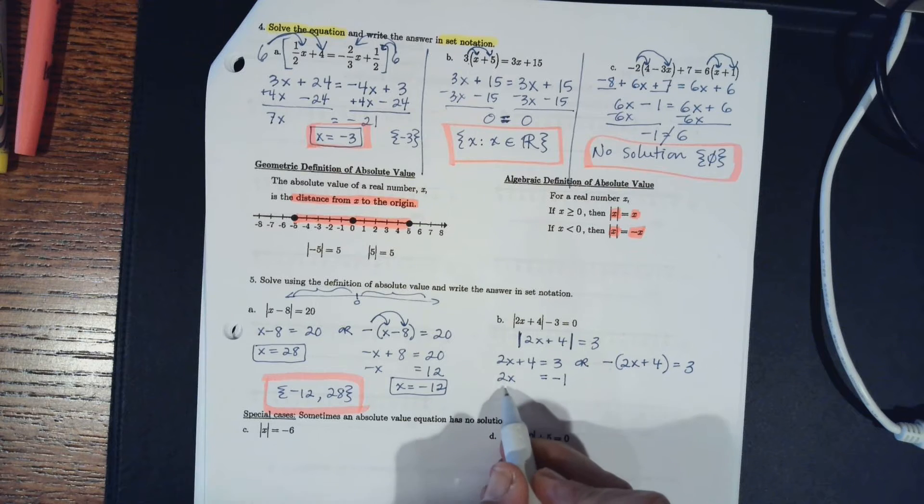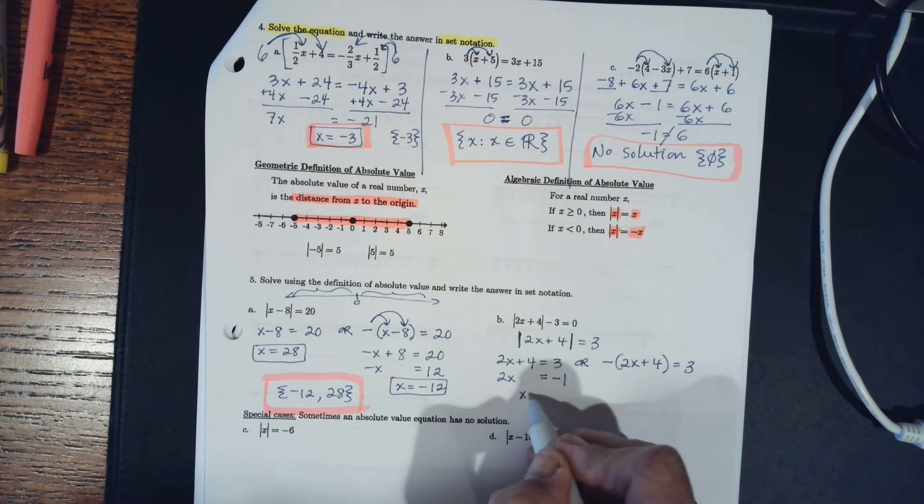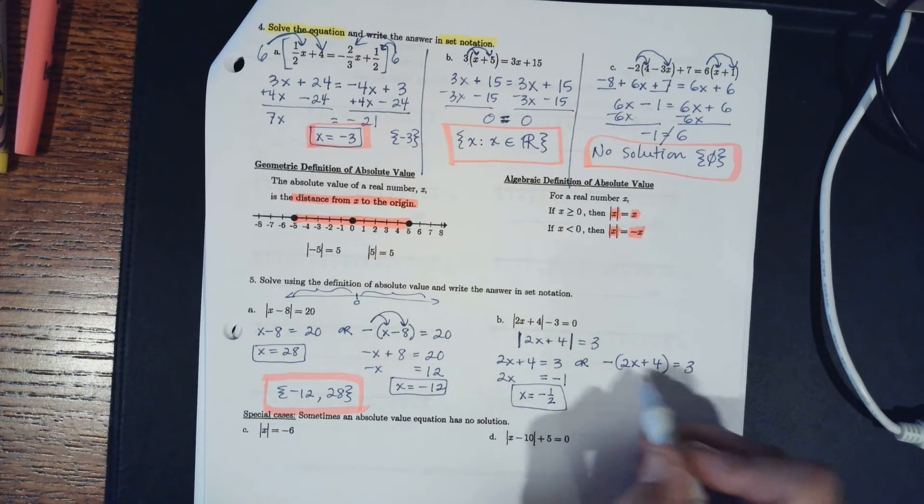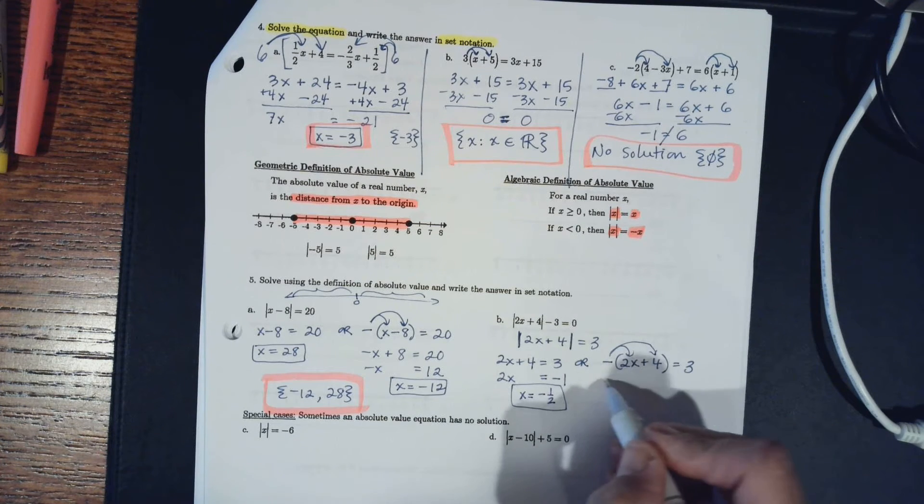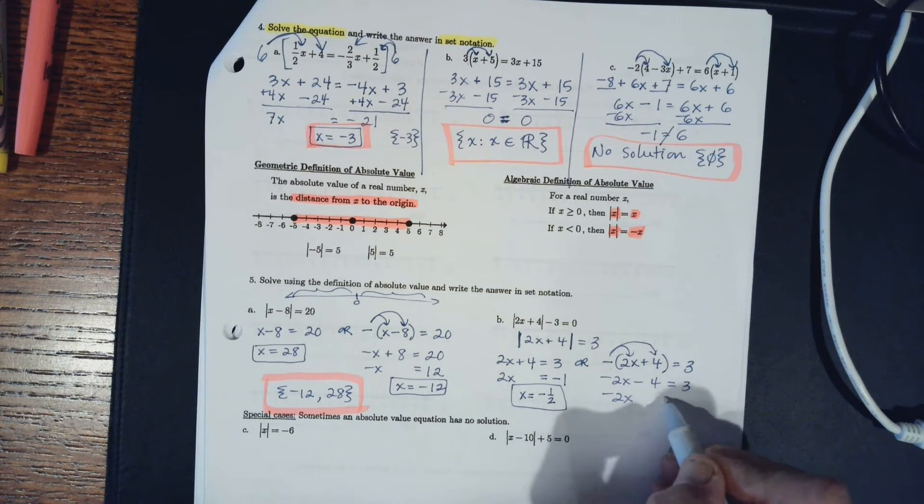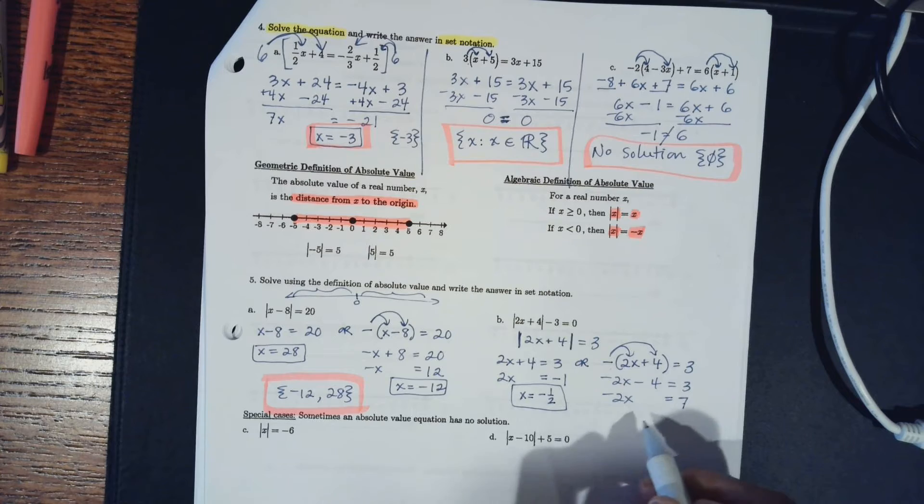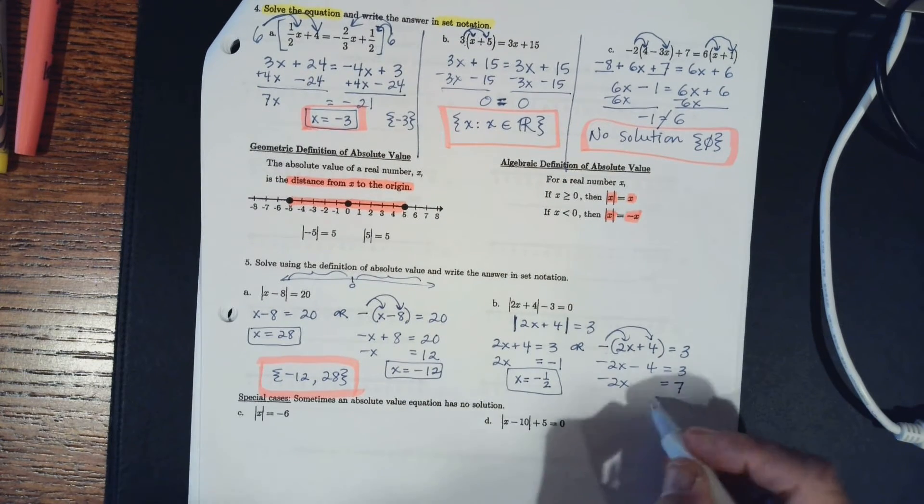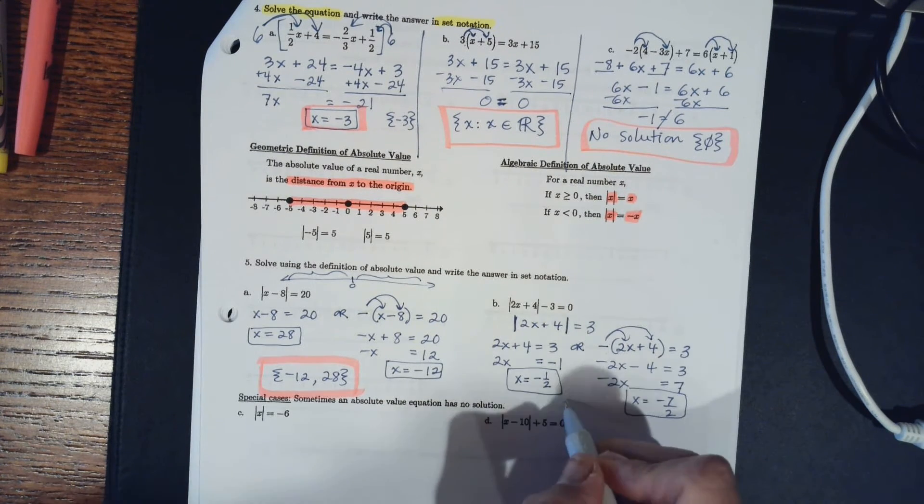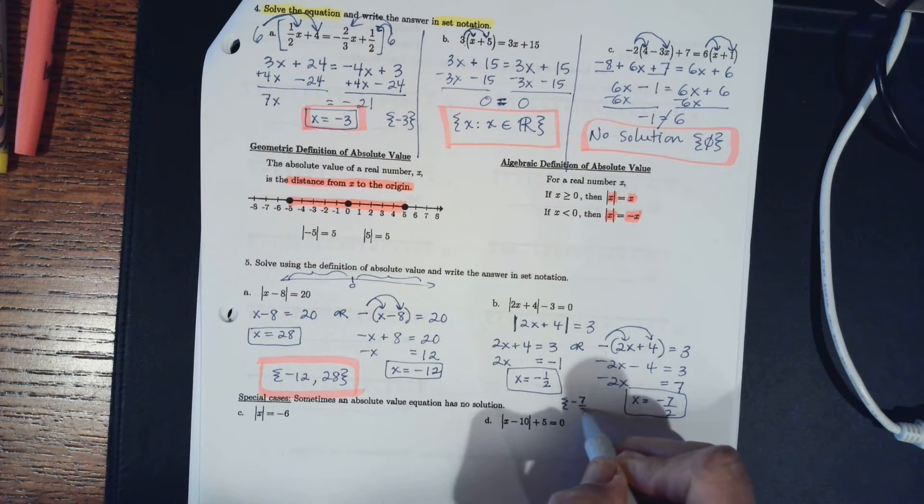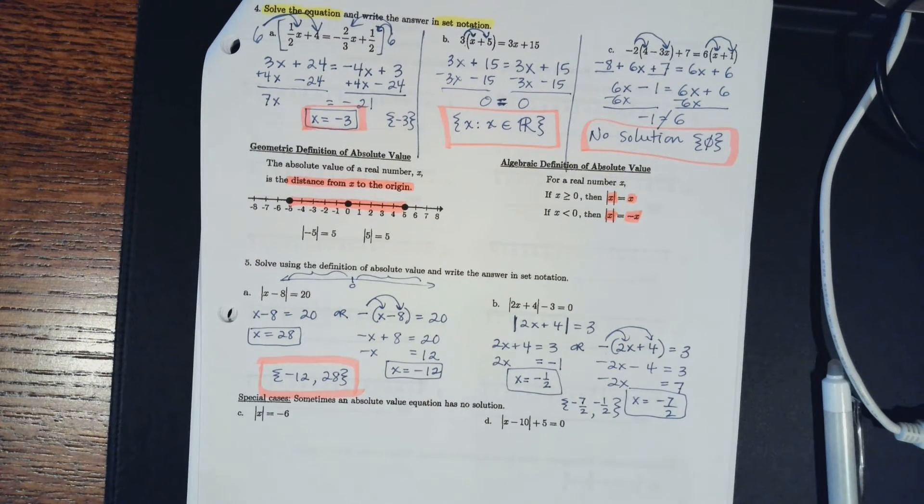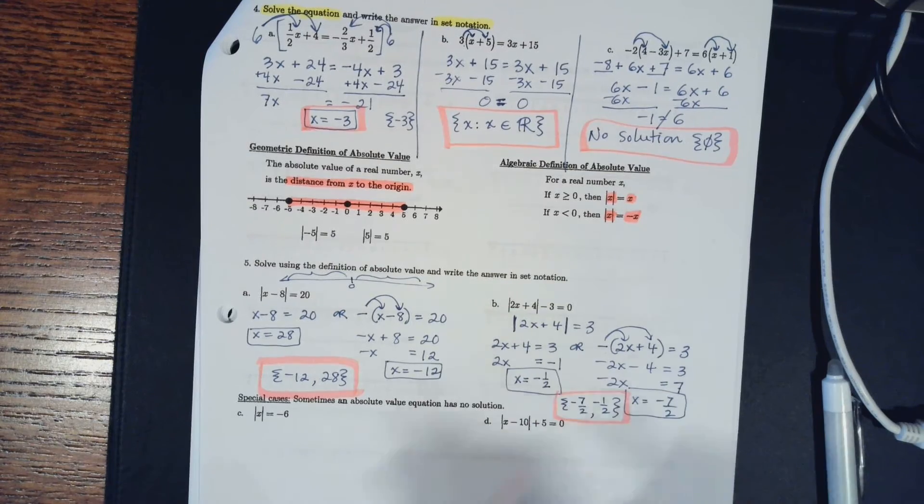And I divide by 2 because x is being multiplied by a 2, so I get x equals negative half. Over here I distribute my negative. Now I'm going to add 4 to both sides, I'm going to divide by negative 2 to undo that multiplication, and I get negative 7 over 2. So again as a set, it's negative 7 over 2, negative 1 half, because that's the smaller number so I always put it to the left in order.